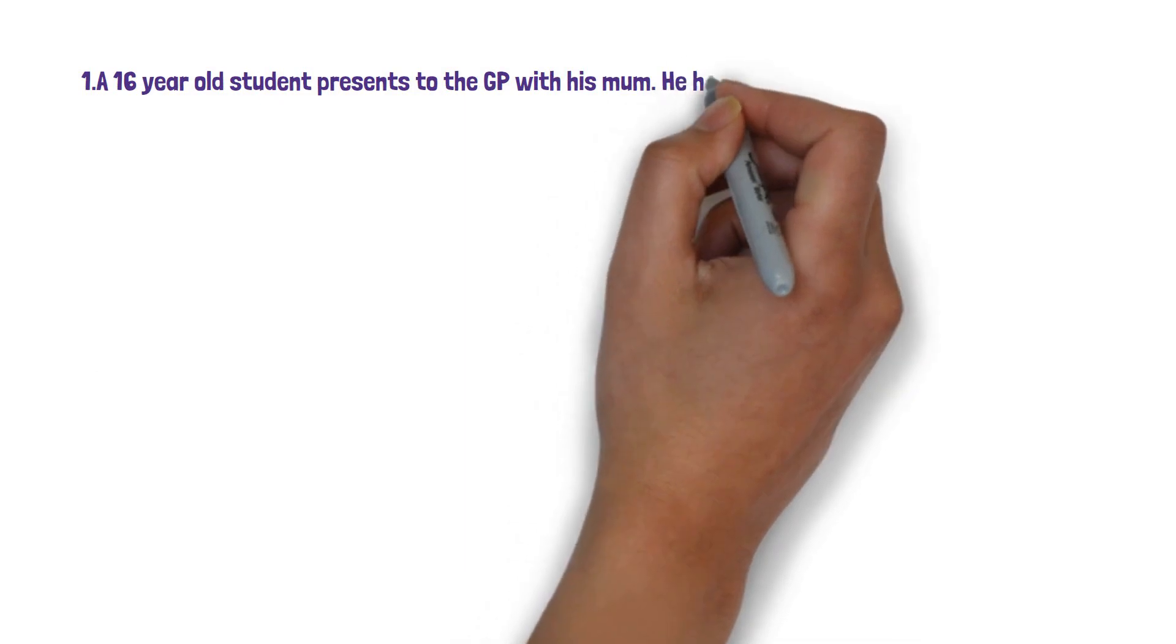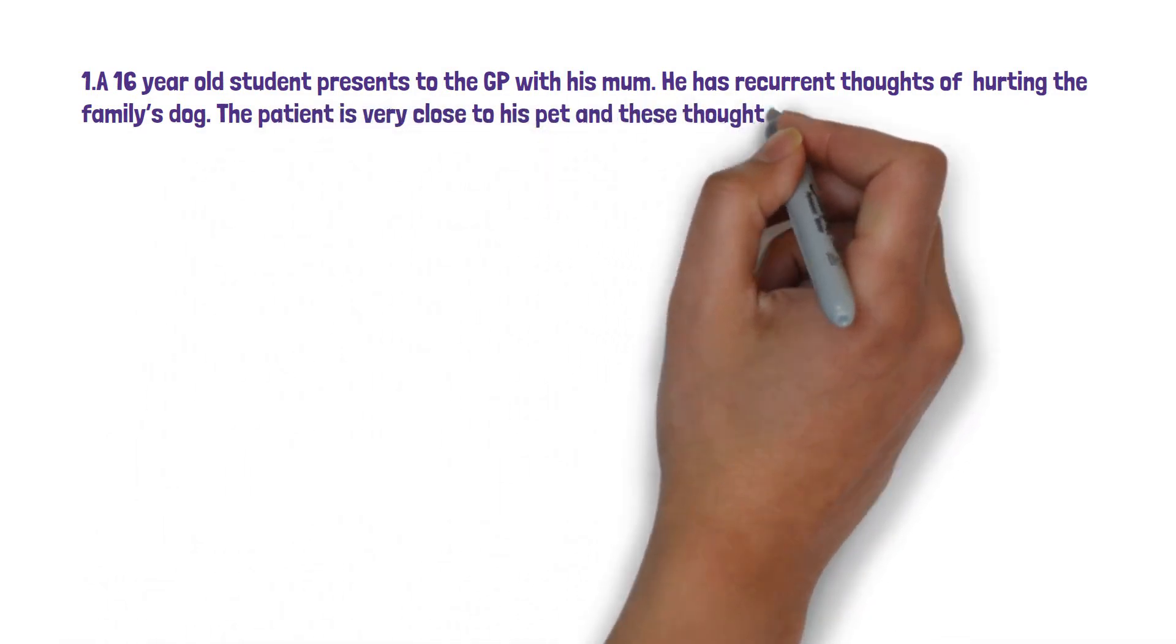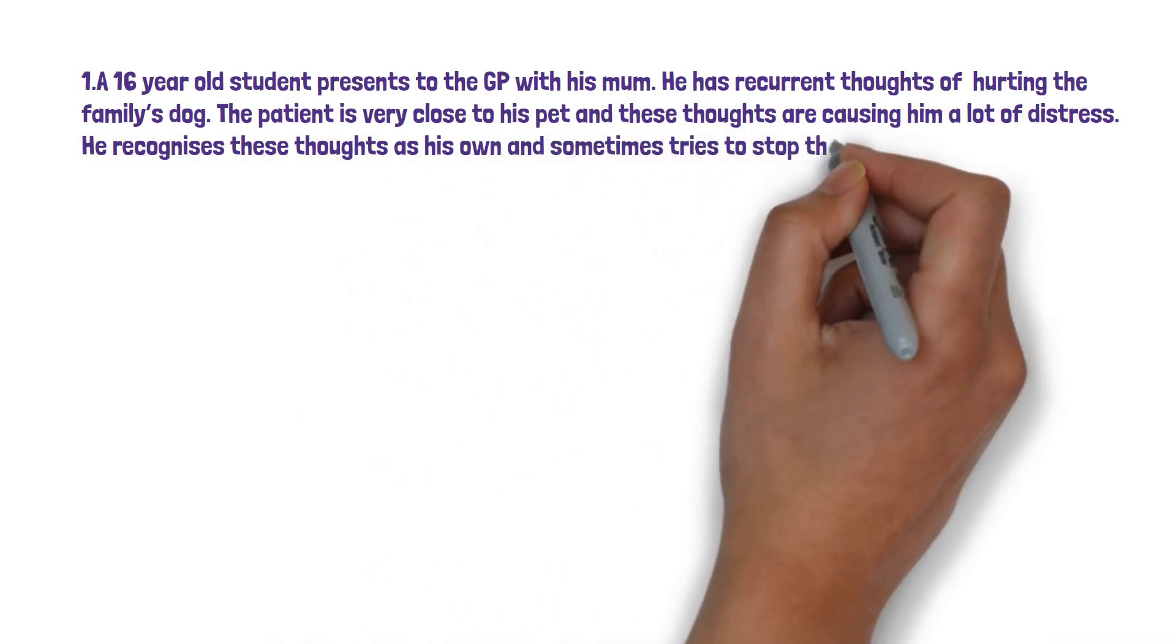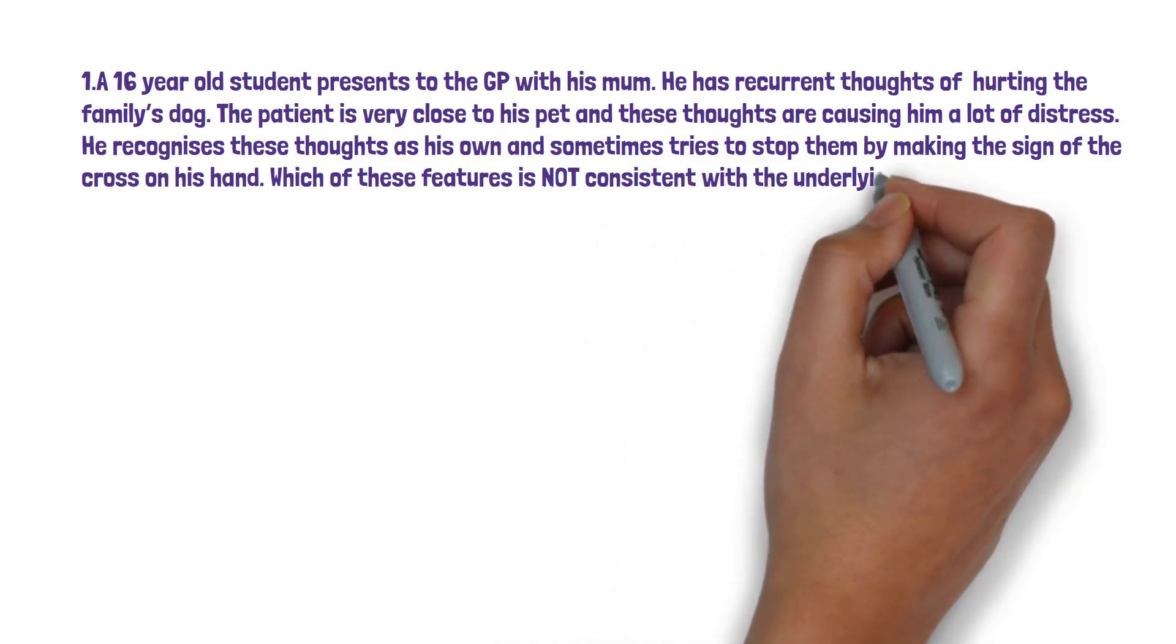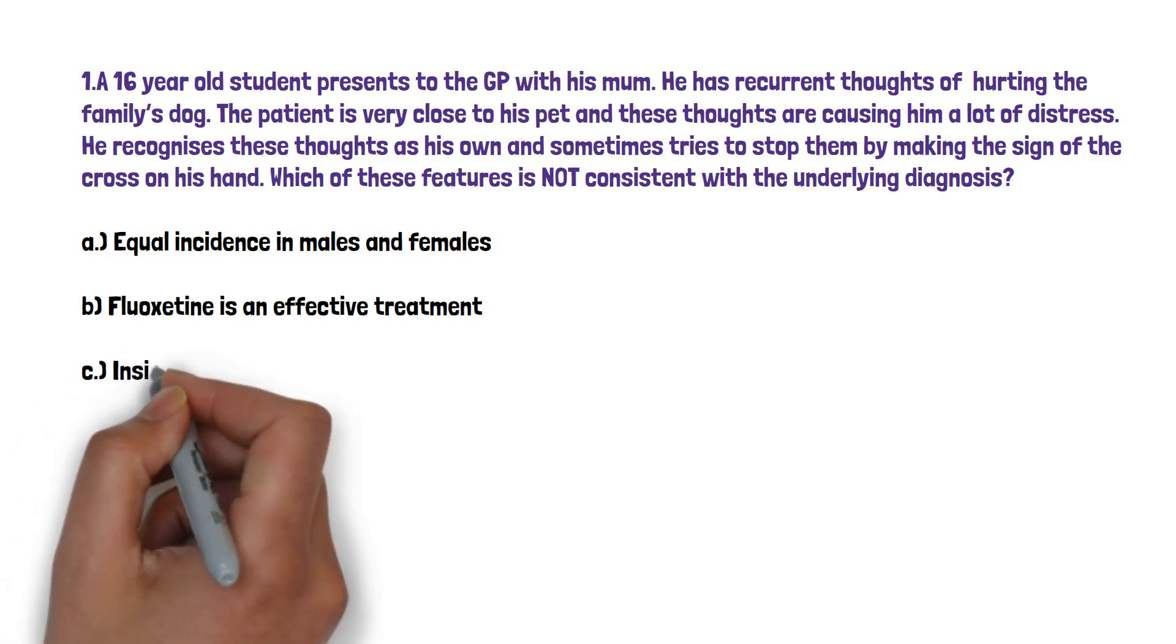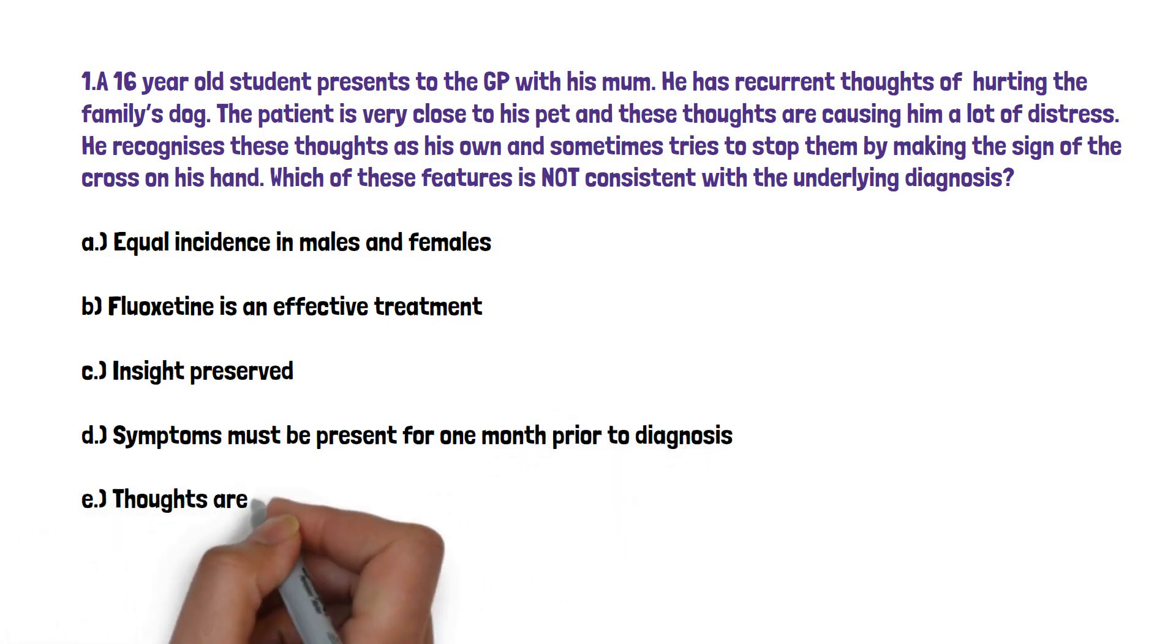First of all the patient is a 16 year old student who presents to the GP with his mum and he has recurrent thoughts of hurting the family's dog. The patient is very close to his pet and these thoughts are causing him a lot of distress. He recognizes these thoughts as his own and sometimes tries to stop them by making the sign of the cross on his hand. Which of these features is not consistent with the underlying diagnosis? A. Equal incidence in males and females. B. Fluoxetine is an effective treatment. C. Insight is preserved. D. Symptoms must be present for one month prior to diagnosis. Or E. Thoughts are repetitive.